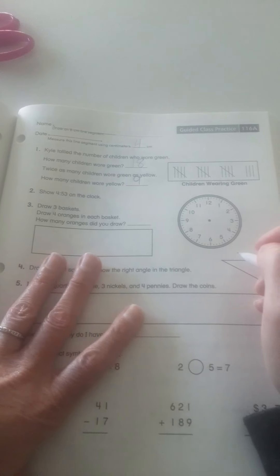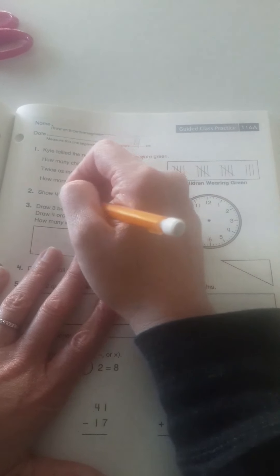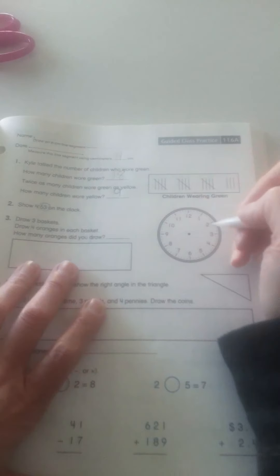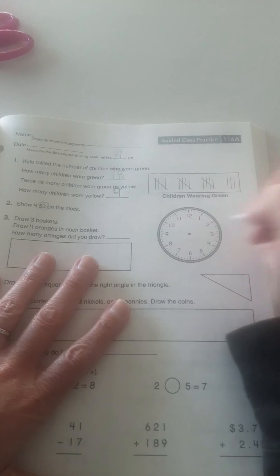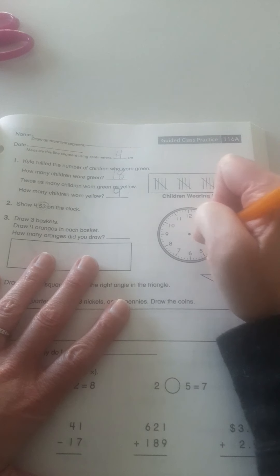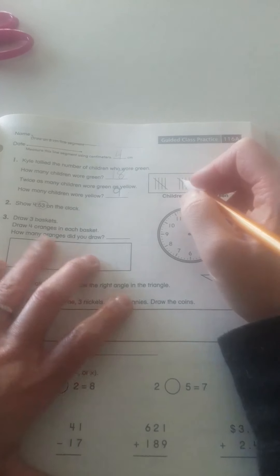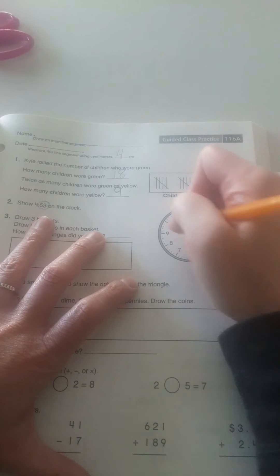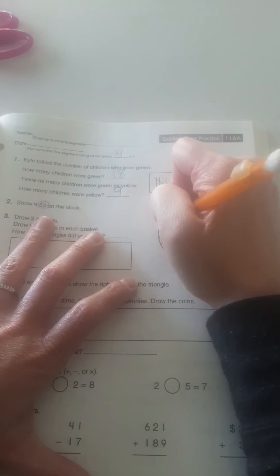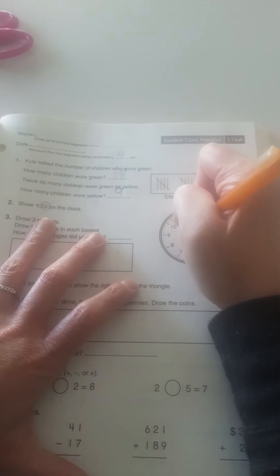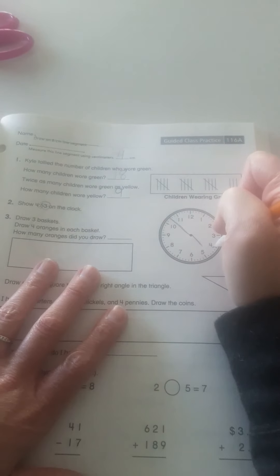Alright, it says, show 4:53 on the clock. 53. It's getting close to 5 o'clock. So, I am going to draw my hour hand close to the 5, but not there yet. 53. I know the 10 is 50. And then I'm going to go 1, 2, 3. And that would be 4:53.